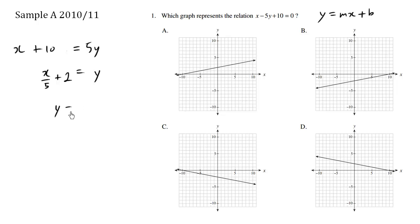So if I rewrite this, y equals one-fifth x plus 2. And this here is the slope, and this here is the y-intercept.